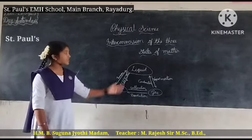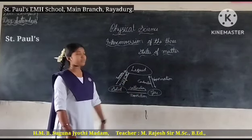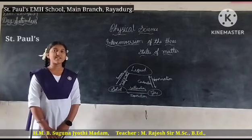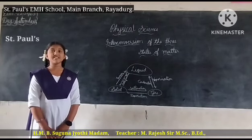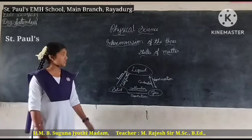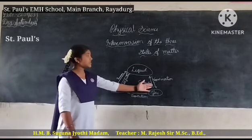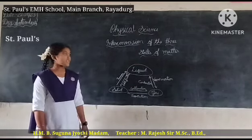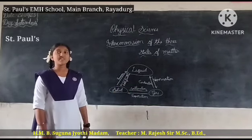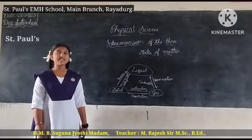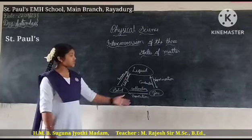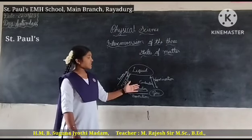Liquid is converted into gas by the process of vaporization. When water is heated, vapour arises from it. The gas is converted back into liquid by the process of condensation. When a beaker is closed with a lid, water droplets form on the lid. This physical process is called condensation.